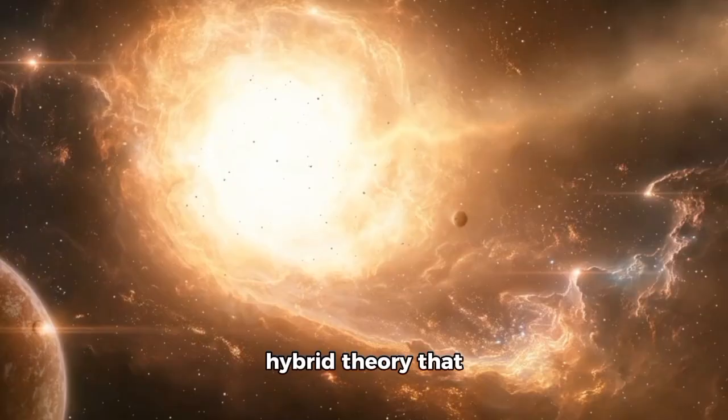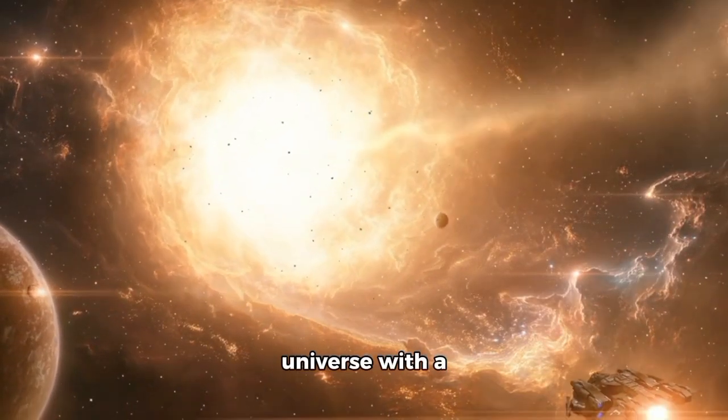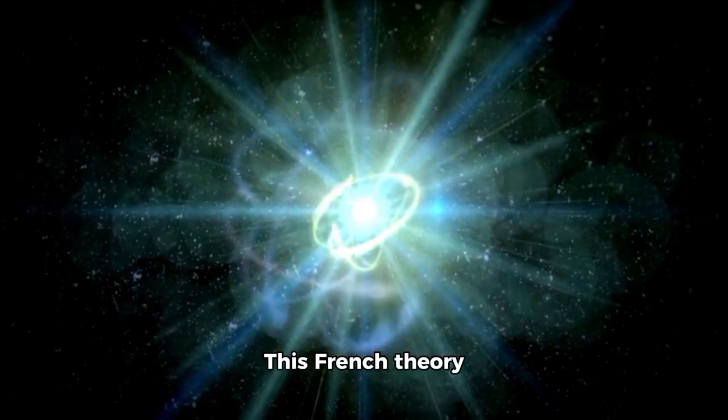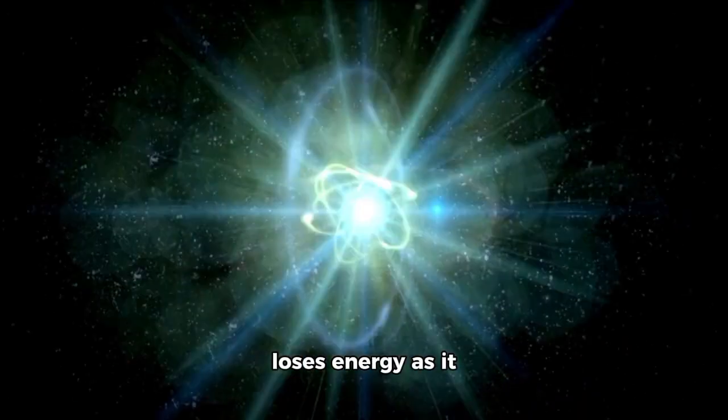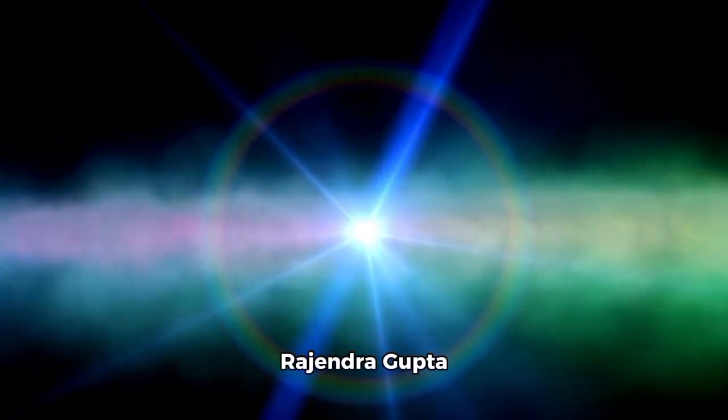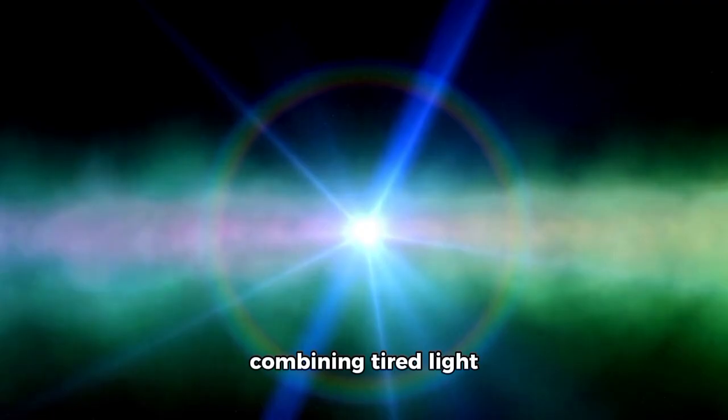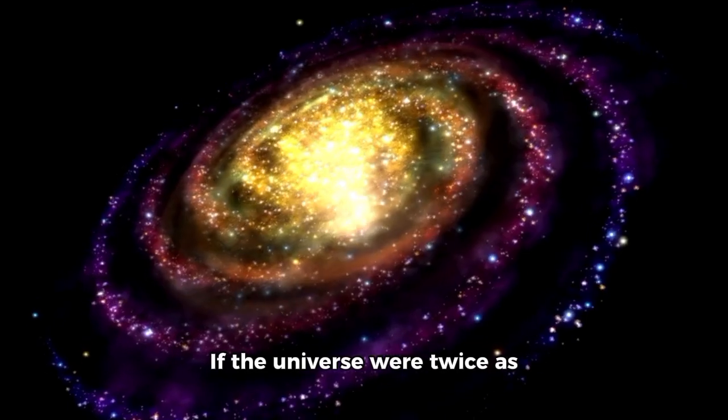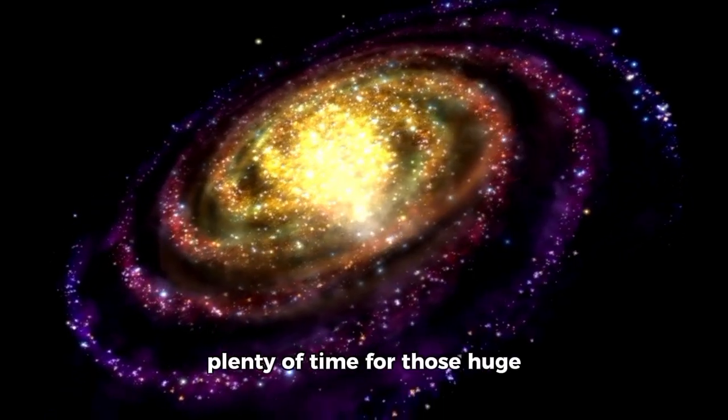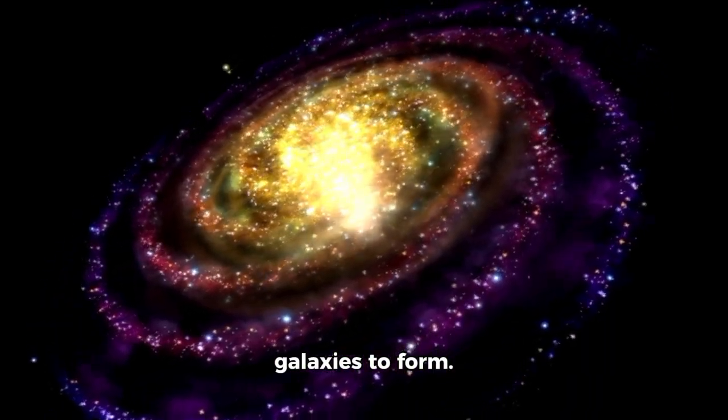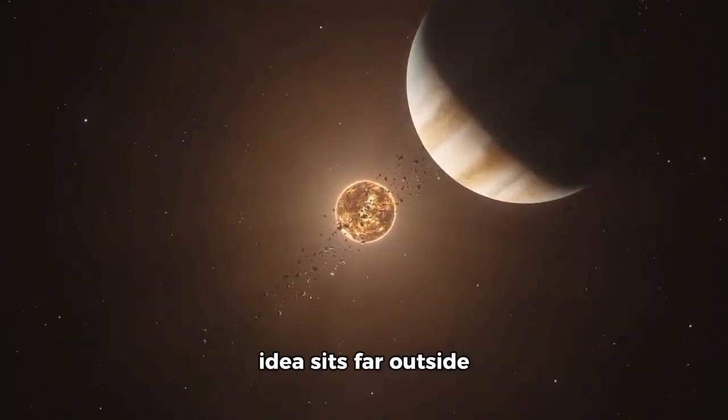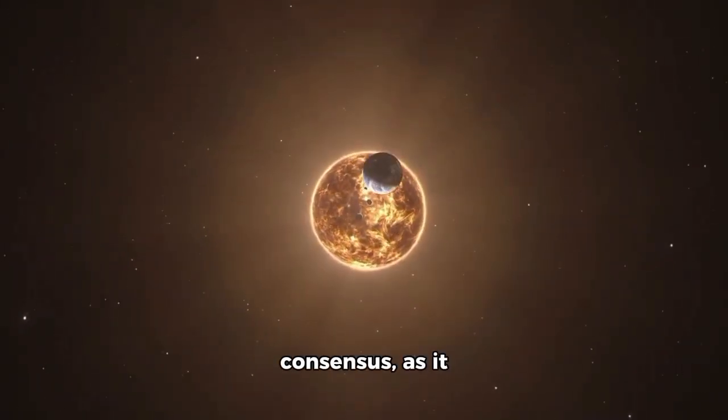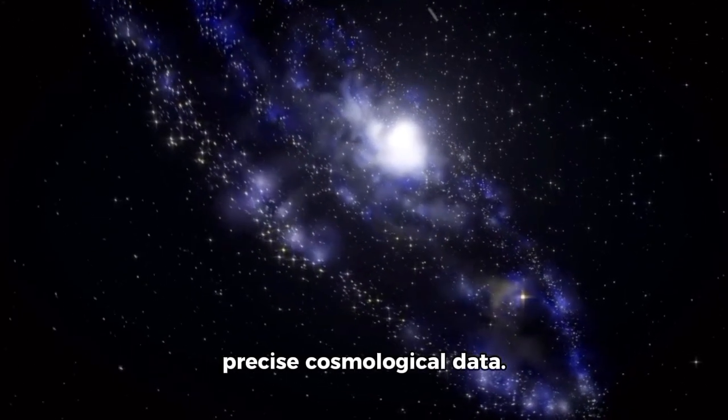One such idea is a hybrid theory that combines the expanding universe with a century-old concept called tired light. This fringe theory suggests that light loses energy as it travels through space. In a controversial 2023 paper, physicist Rajendra Gupta proposed that by combining tired light with standard expansion, the universe might not be 13.8 billion years old, but a whopping 26.7 billion years old. If the universe were twice as old, there would suddenly be plenty of time for those huge galaxies to form. While it's a fascinating thought experiment, this idea sits far outside the scientific consensus as it contradicts mountains of precise cosmological data.